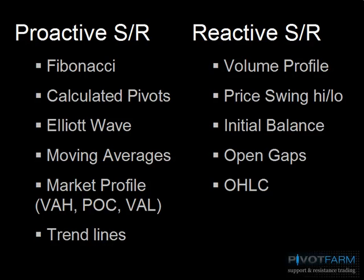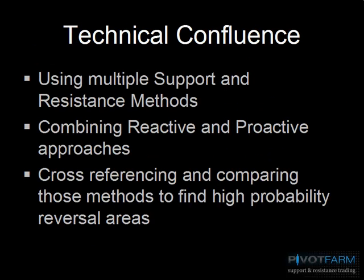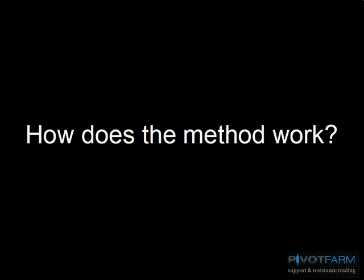We include a variety of analysis methods in our thinking and separate them into those two camps. The core concept of how we put this all together is what we describe as technical confluence. Using multiple support/resistance methodologies — like Fibonacci, Elliott Wave, and others — we combine these reactive and proactive approaches into one core methodology. We cross-reference and compare these methods to find high-probability areas where many of these methods happen to coincide.